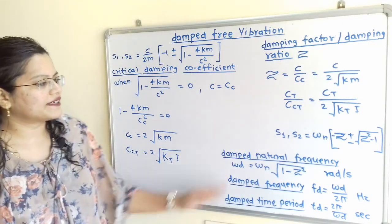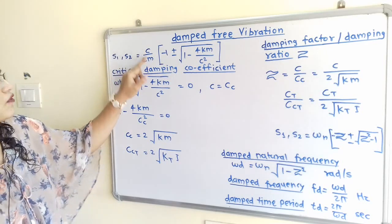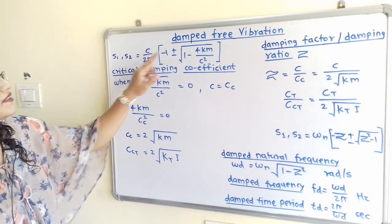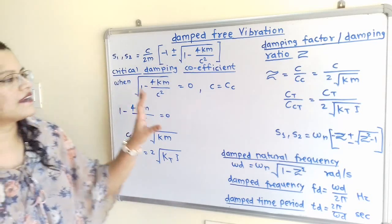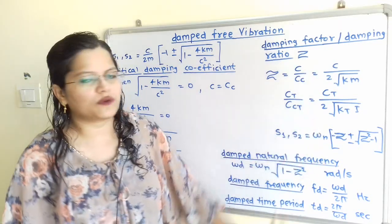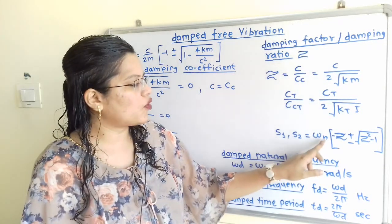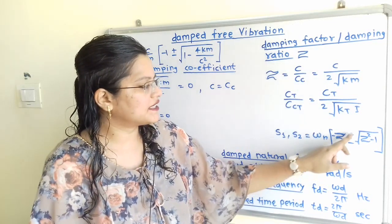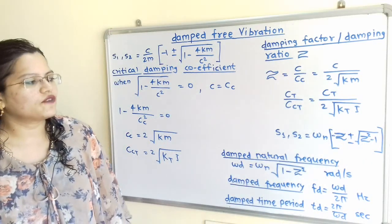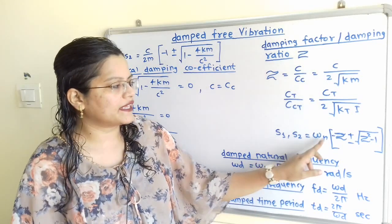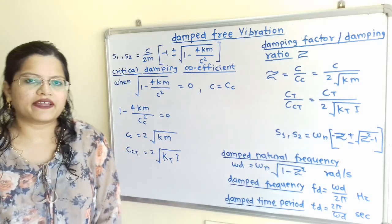Now we write the solution in terms of zeta. The solution S1 and S2, originally in terms of damping coefficient C, mass M, and spring stiffness K, becomes: S1, S2 = ωn [−ζ ± √(ζ² − 1)], where ωn is the natural frequency. Given ωn and ζ, we can find this solution.